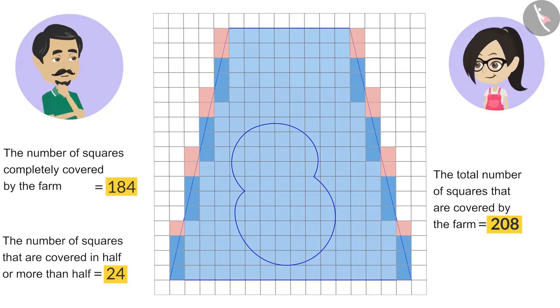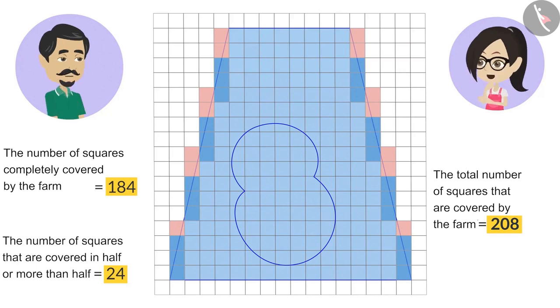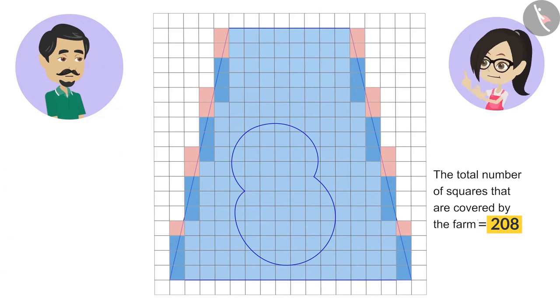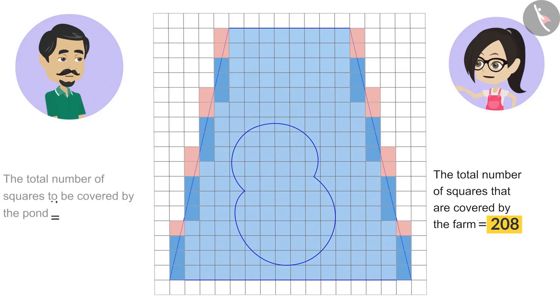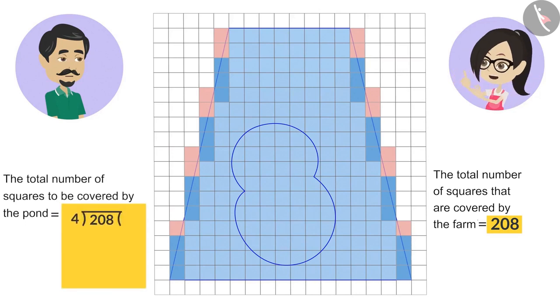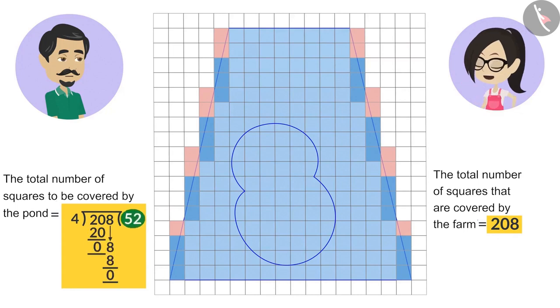It looks like this. Now, you want the pond to be built in one-fourth of the farm, right? That means the pond should cover 208 divided by 4 squares. That is, if this pond covers almost 52 squares, then we can say that this pond is one-fourth of the farm.